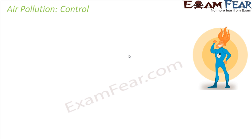Now that we saw how dangerous air pollution can be — it can cause so many diseases in human beings, in animals, it can even kill many of them, it can also destroy plants. Basically it can destroy several life forms existing on earth. So now we should also find out ways to control air pollution, because if it keeps on increasing in this way, then a day will be very near when no life will exist on earth. Let us see what are the various ways by which we can control air pollution.